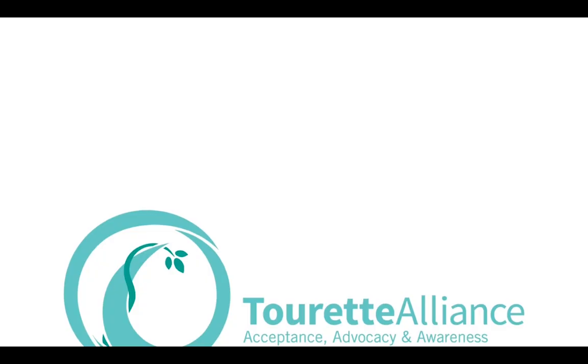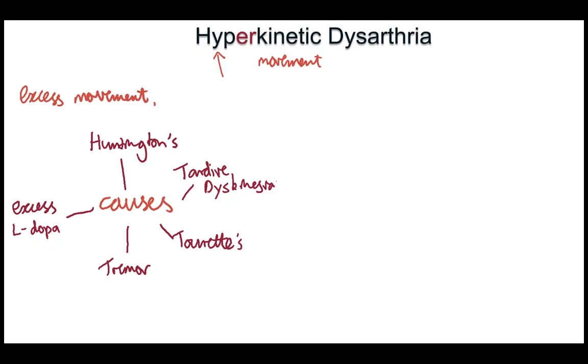Those are some examples of hyperkinetic dysarthria. They're kind of self-evident — you don't need an especially trained ear to pick them. The shortcut is already here: excess involuntary or compulsive movement causes hyperkinetic dysarthria. Thanks for listening. Check out the other videos on the other subtypes of dysarthria, and leave topic requests in the comments.